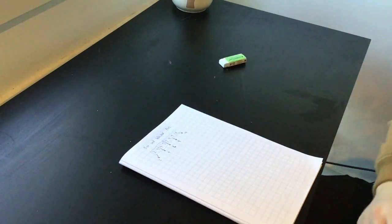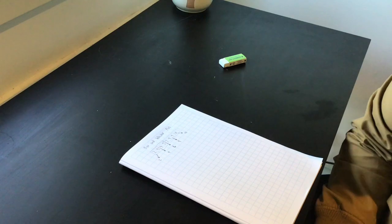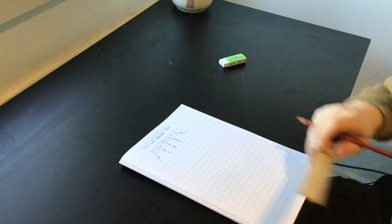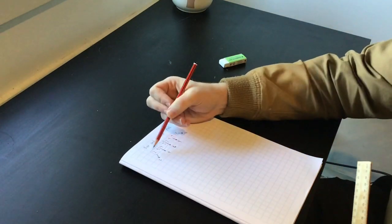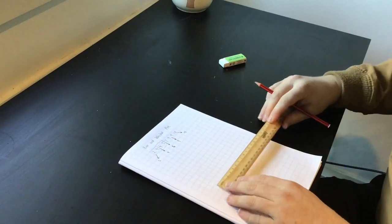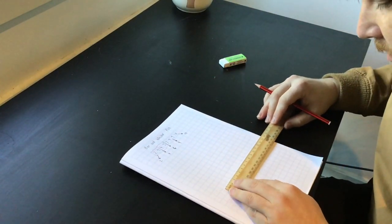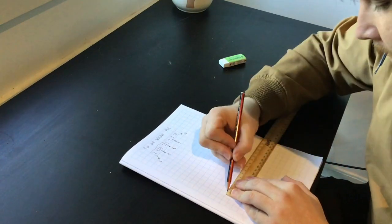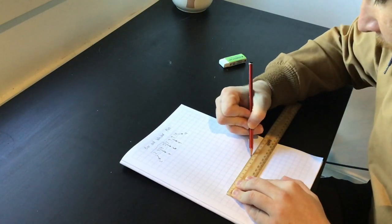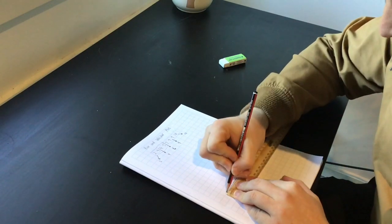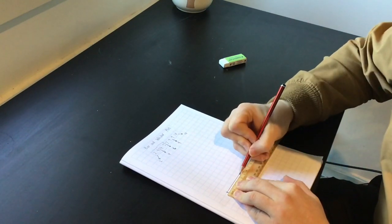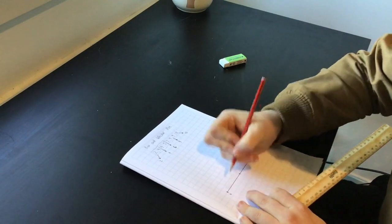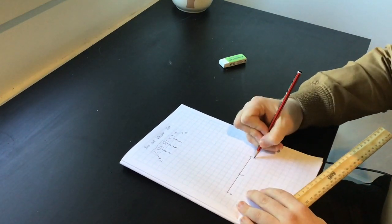Once you've found your medians, you want to create a number line. Our numbers go from 0 to 10, so I'm going to create a nice 10-centimeter number line. 10 is our highest value and 0 is our lowest, and you should be able to figure out where all the other numbers go.